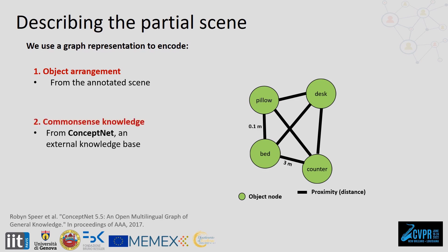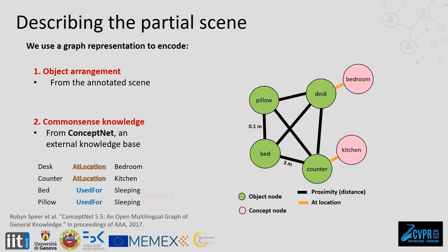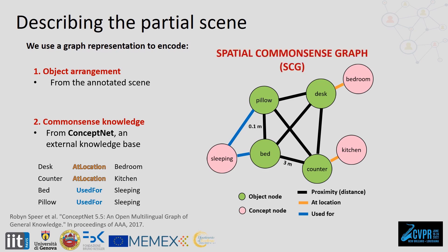The second type of information is the Common Sense Knowledge. This comes from a standard knowledge base called ConceptNet, and describes where objects are typically located and how they are typically used. The idea is that by using this information, the network can learn that objects at a similar location or that have similar use should be located closer to one another or treated similarly. We encode this information by creating new nodes called Concept Nodes, and connect them to the object nodes with two new types of edges: the location edge and the used-for edge. We call this graph representation the Spatial Common Sense Graph, as it allows for both spatial and common sense reasoning.